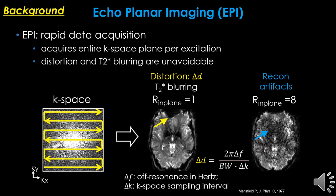It is widely known that EPI is a quite efficient acquisition technique which obtains entire k-space per excitation. However, everything has two sides. In EPI, distortion and T2-star blurring are unavoidable issues, especially distortion, which is related to off-resonance, sampling bandwidth, and k-space sampling interval. However, people use high acceleration factors to increase bandwidth, which naturally induces high undersampling artifacts.